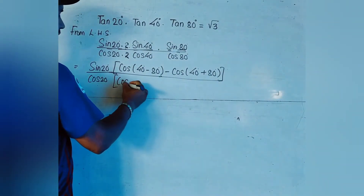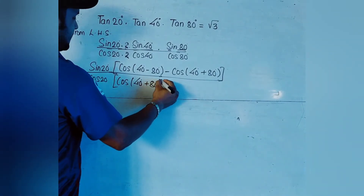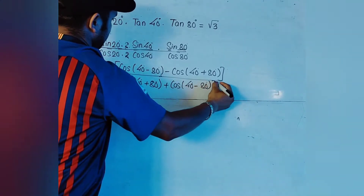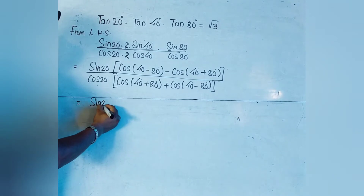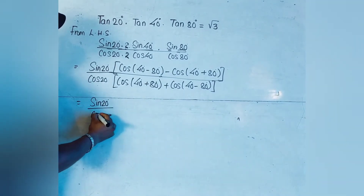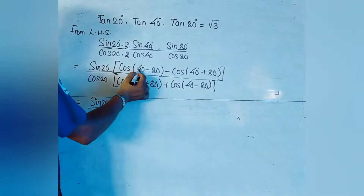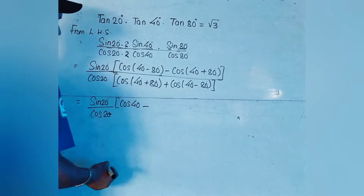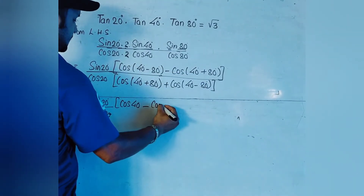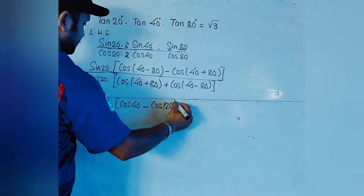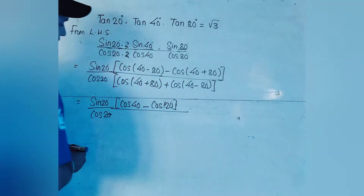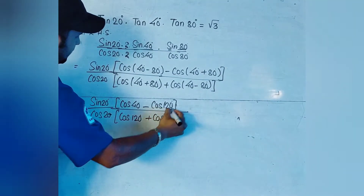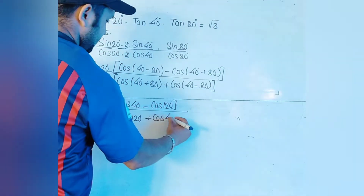With A = 40° and B = 80°, we write sin20° / cos20° as it is. Now substituting: cos(40° − 80°) = cos(−40°) = cos40°, and cos(40° + 80°) = cos120°. In the denominator, cos(40° + 80°) = cos120° and cos(−40°) = cos40°.